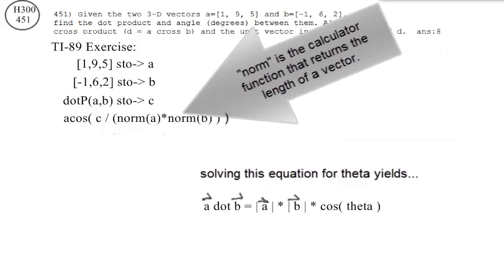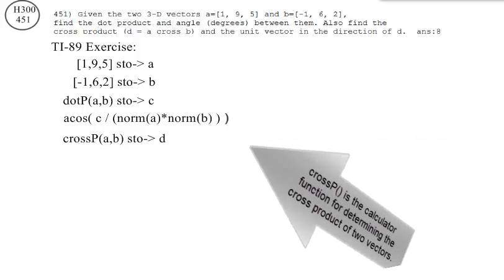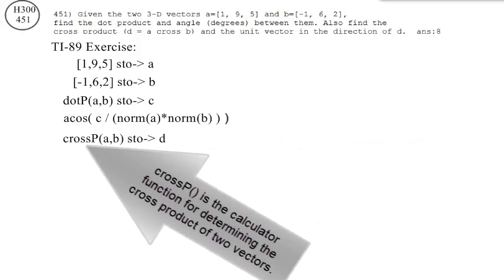Norm is the calculator function that returns the length of a vector. Next, find the cross product of the two vectors. CrossP is the calculator function for determining the cross product of two vectors.